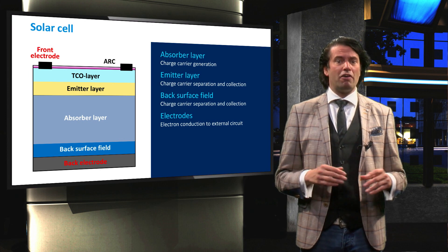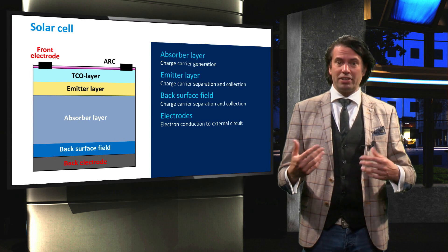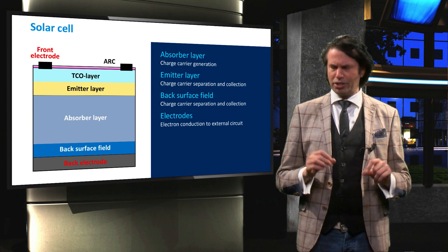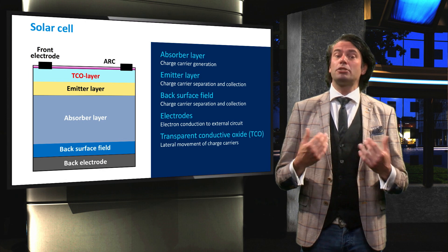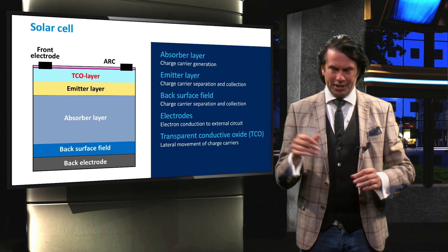For many PV technologies, however, the conductive properties of the emitter layer are too poor for good lateral transport. For these technologies a transparent conductive oxide layer is introduced.